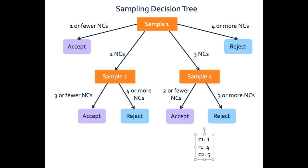We've got a double acceptance sampling plan where our first sampling acceptance criteria is one and first sampling rejection criteria is four. So in our first sample, if we have one or fewer nonconforming units we accept; if we have four or more we reject. We also have two cases where we can't make that accept/reject decision yet, so we take a second sample. The last piece of information we need is our second sampling acceptance criteria, C2, which is five — meaning between samples one and two we can have a total of five nonconforming units and not reject.